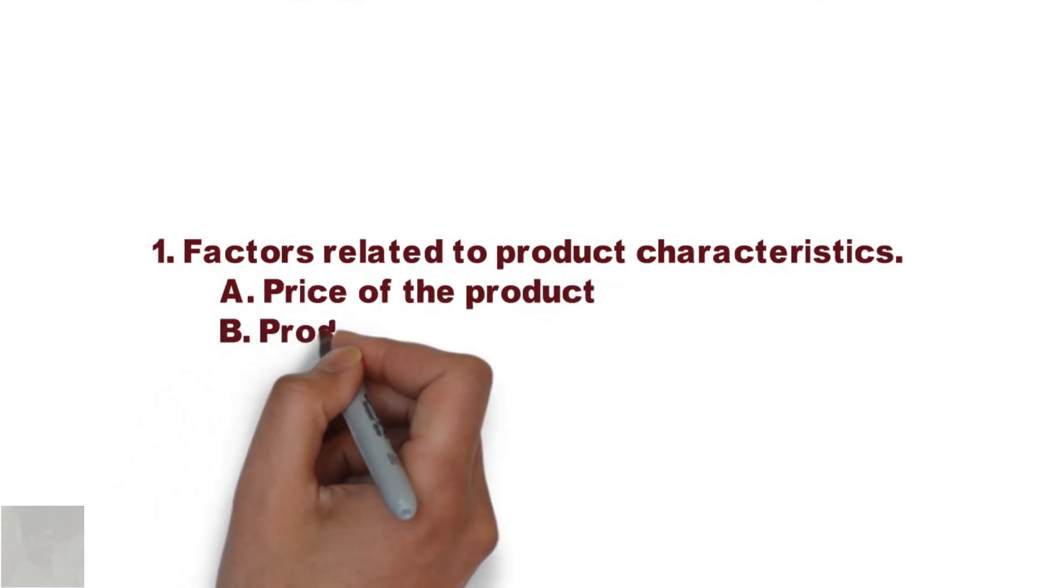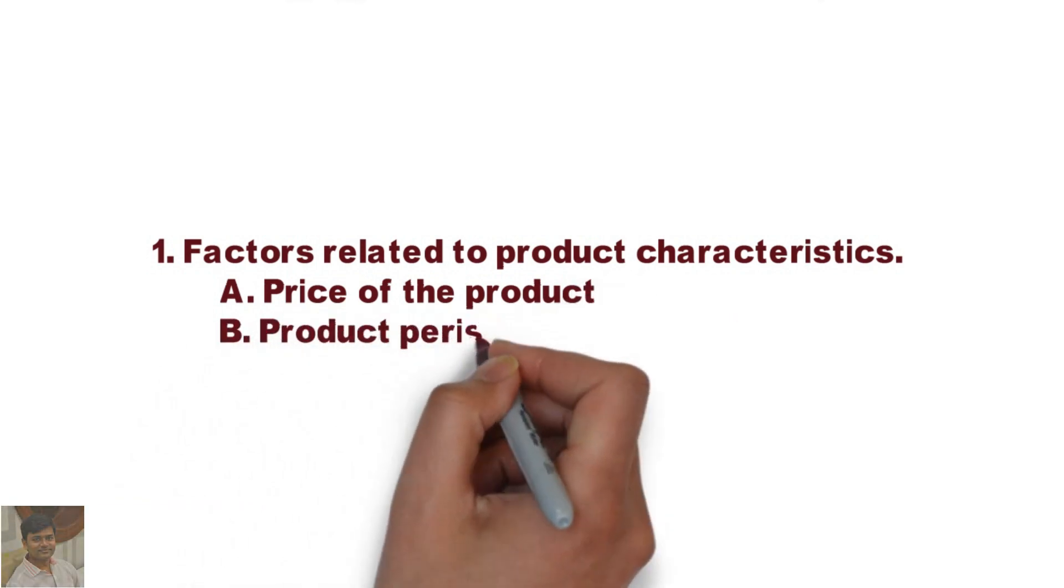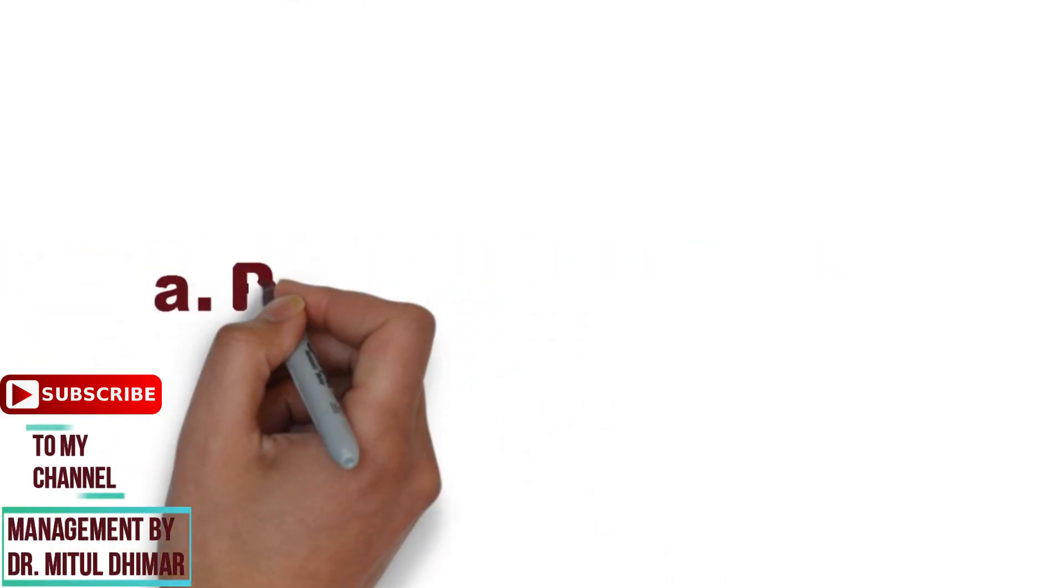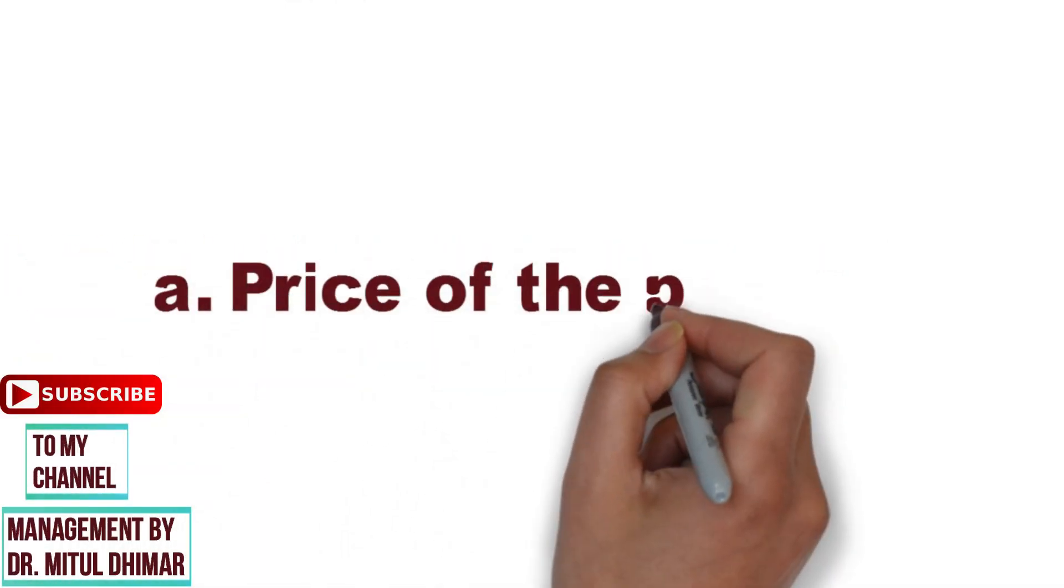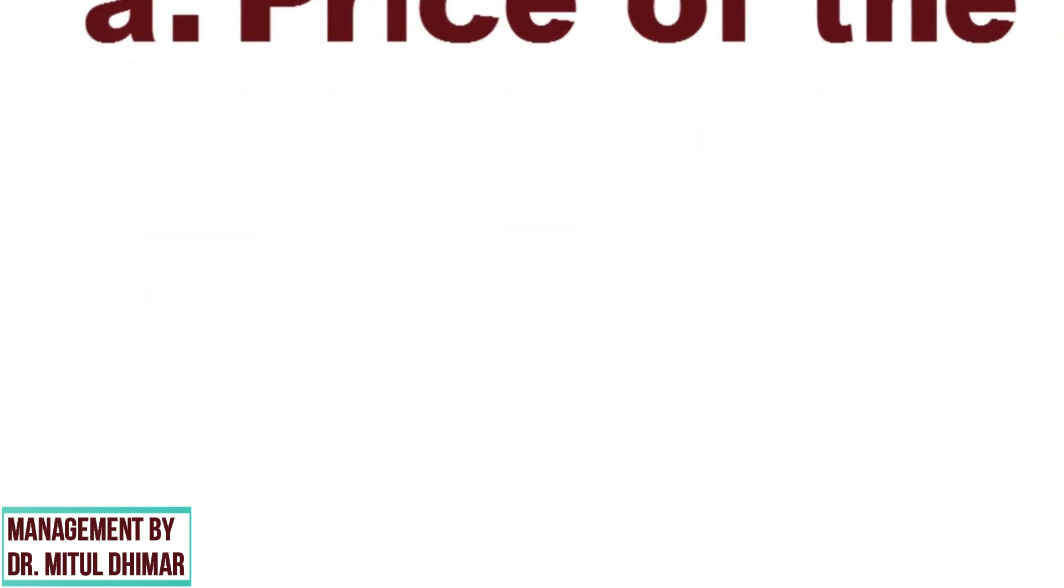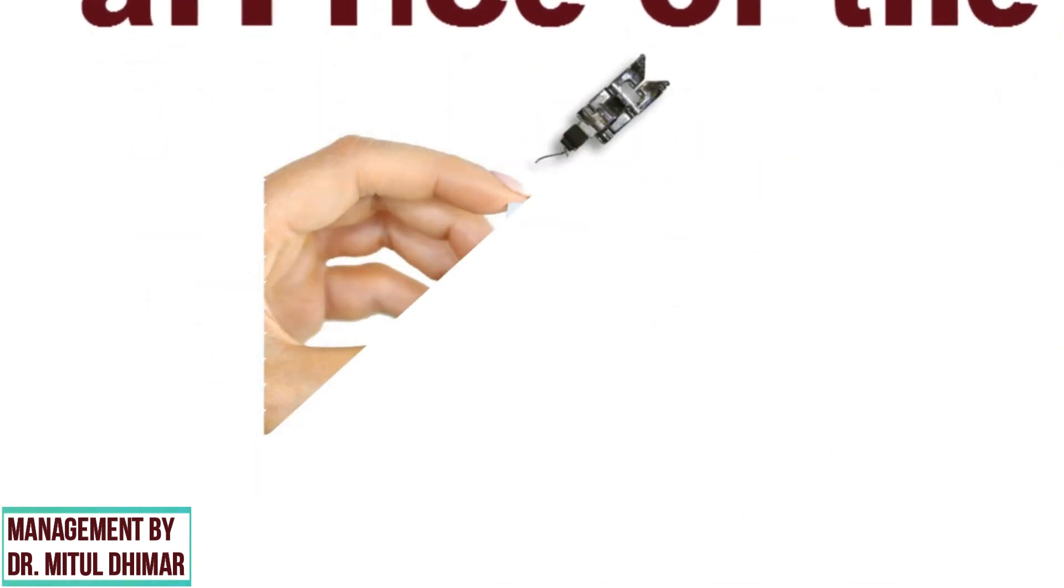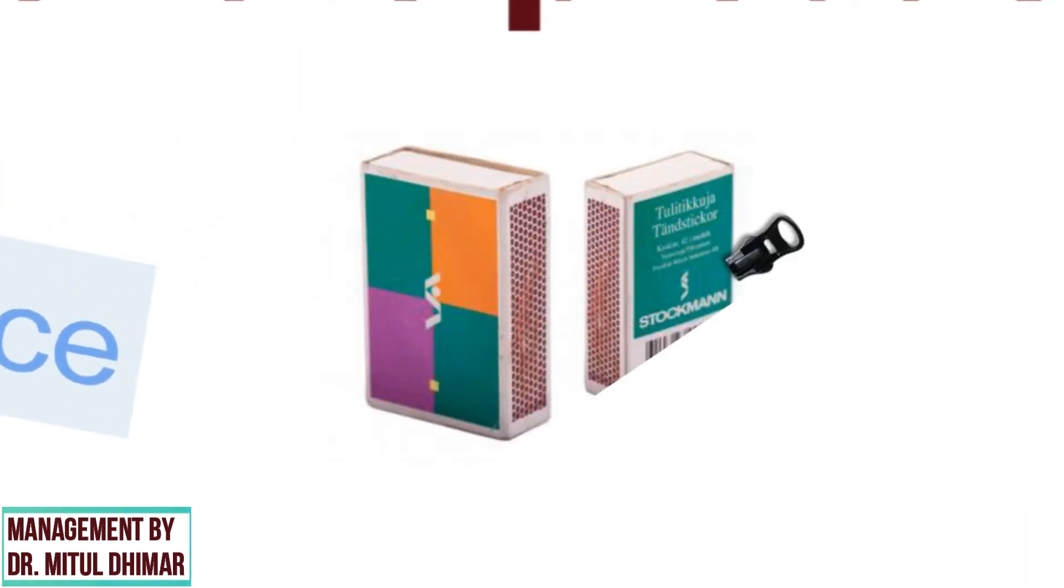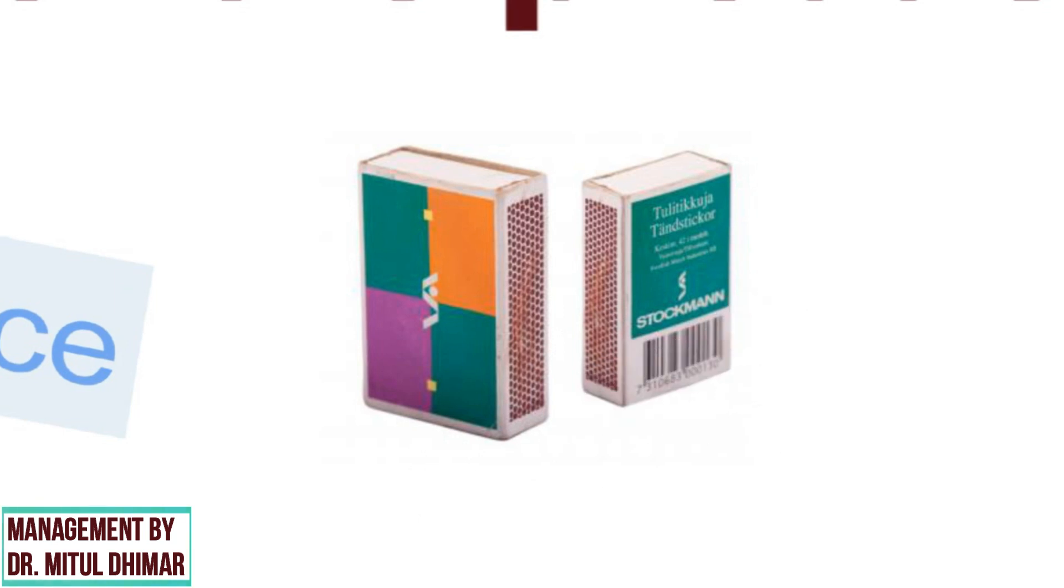We are going to study two product related characteristics: price of the product and product perishability. Number one, price of the product. Price of the product is one of the important factors to be considered at the time of selecting channel. If price of the product is low, a number of middlemen required for sale are more. For example, in selling matchbox, more numbers of channel members are required.